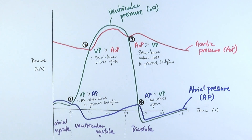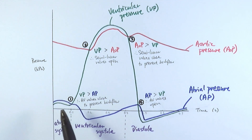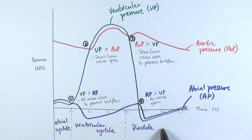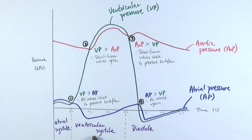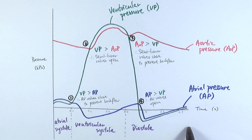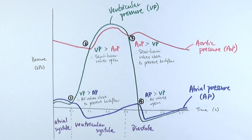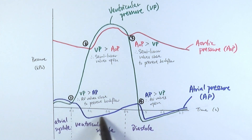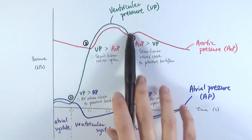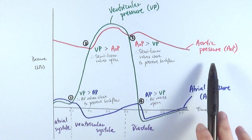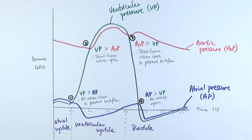To run through this again: pressure is on one axis and time on the other. The whole cardiac cycle lasts about 0.7 to 0.8 seconds depending on the person. We have three major stages: atrial systole, ventricular systole, and then a longer period of diastole before returning to atrial systole. We consider three different pressures: atrial pressure, ventricular pressure, and aortic pressure, or equivalently pulmonary artery pressure.